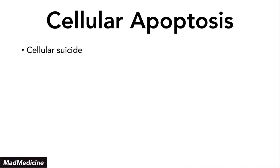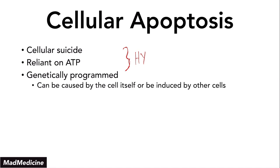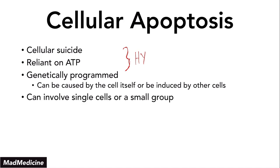Apoptosis is also known as cellular suicide. It is programmed cell death that is reliant on ATP, and it is genetically programmed. These are three hallmark concepts of apoptosis that you need to know very well — this is high yield. The cell can go through apoptosis on its own but can also be induced by other cells. It involves either a single cell or a small group of cells. When you are dealing with death at the tissue level, we call this necrosis.